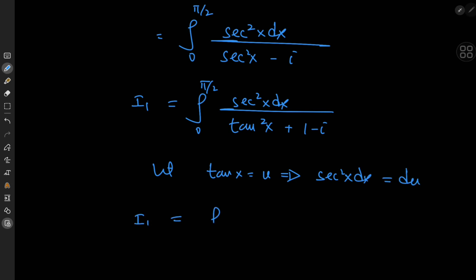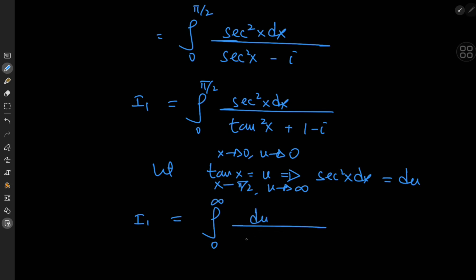So I₁ is now the integral with new limits. As x approaches 0, tan x — that is u — approaches 0 as well. And as x approaches π/2, tan x approaches infinity. So we now have the integral from 0 to infinity of du divided by u² plus 1 minus i.